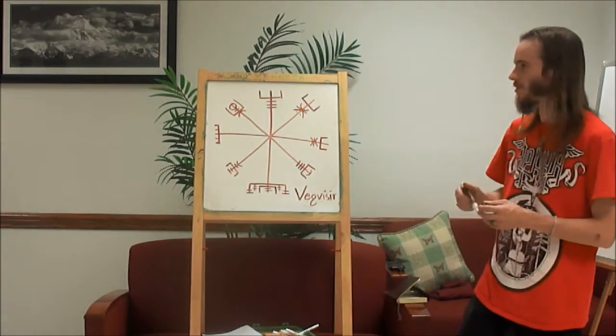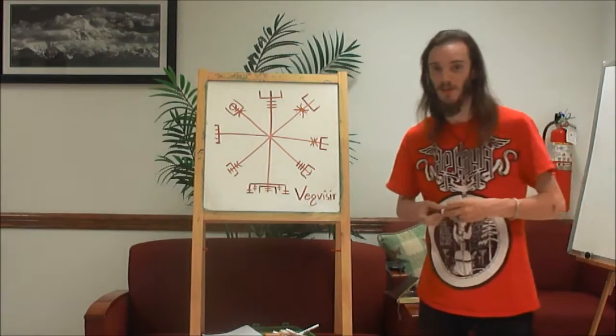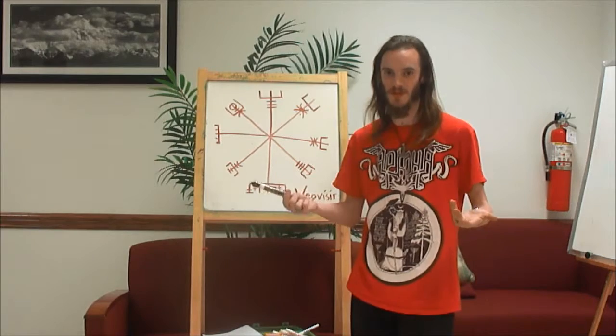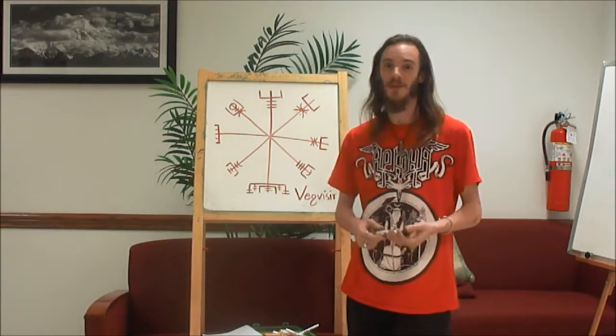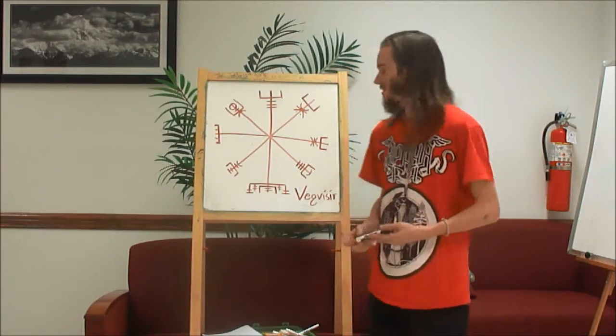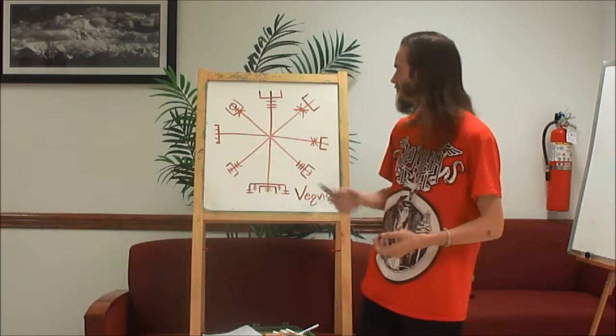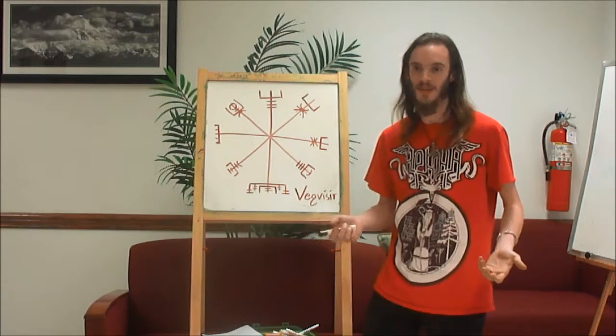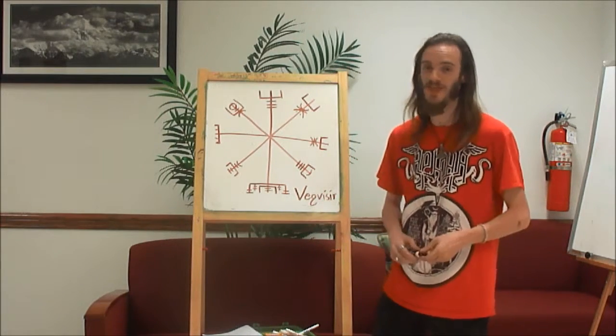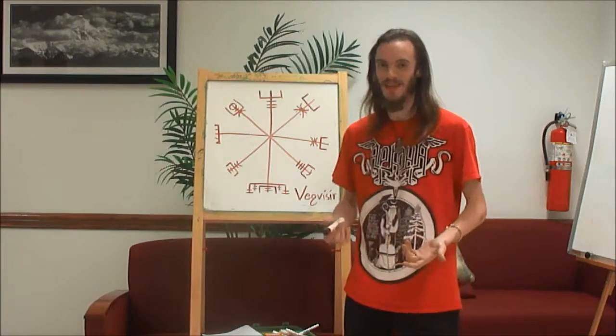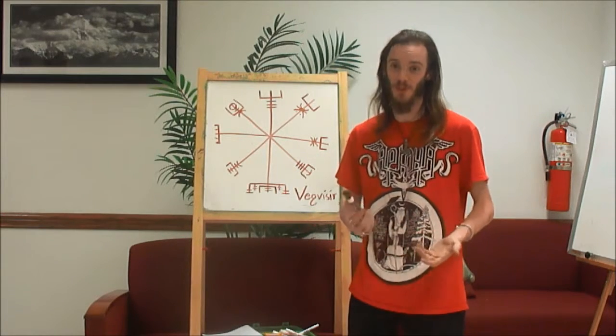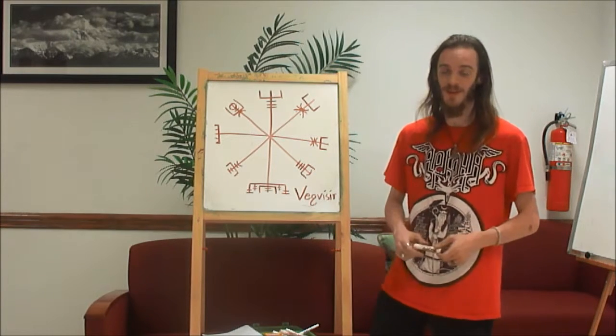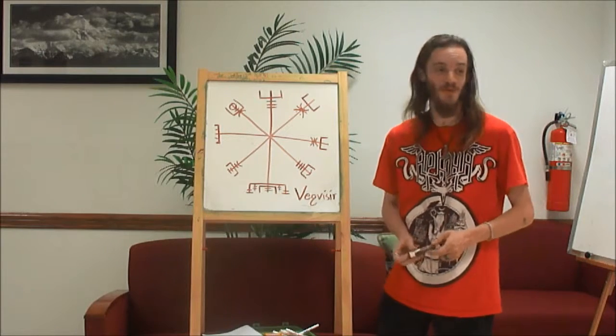I got one last one which is very applicable for tonight. So, this is the last one. Very good for tonight. This is the vegvisir. It's to be carved on oak, symbolic of Thor, and it guides one safely through rough weather. There's nothing particular about this that acts on any person. It's just meant to more invoke Thor, invoke protection against various inclement weather conditions, and to see one safely through it. There's no guarantee that it works. It's more of a petition to Thor. So, this one is a very good one for tonight.